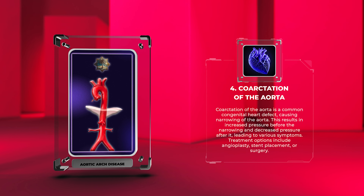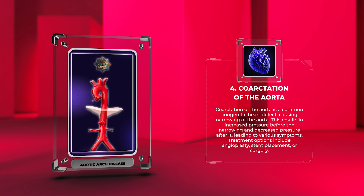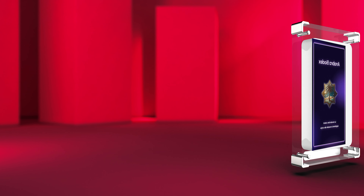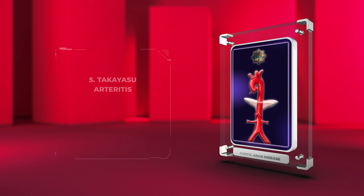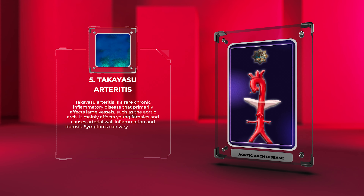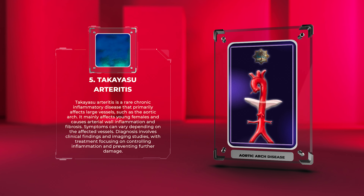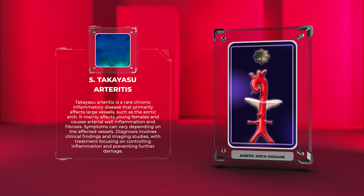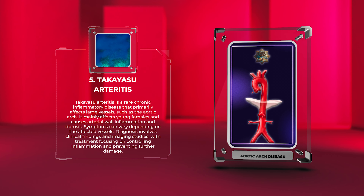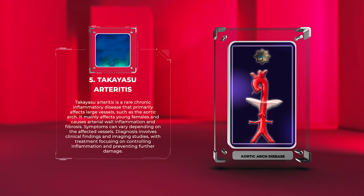Coarctation of the aorta is a common congenital heart defect causing narrowing of the aorta. This results in increased pressure before the narrowing and decreased pressure after it, leading to various symptoms. Treatment options include angioplasty, stent placement, or surgery.